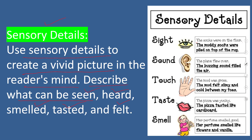Instead of just saying 'the socks were on the floor,' you could say 'the muddy socks were piled on top of the rug.' This has sensory detail that one can imagine and see. Another example: instead of 'the plane flew over,' if you want your reader or listener to actually hear the scene, you could say 'the buzzing sound filled the air.'